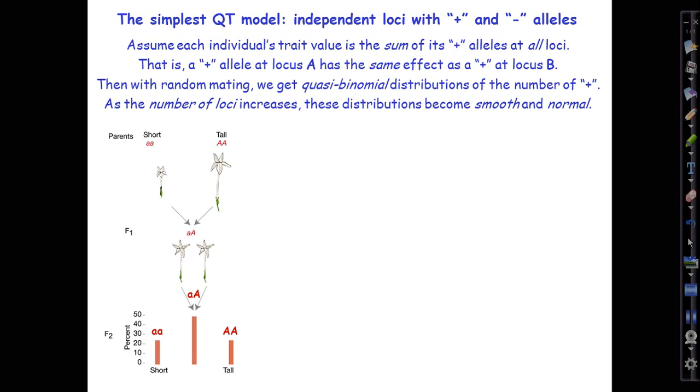So he had a pure-breeding short-flowered line and a pure-breeding tall-flowered line. Tobacco does happily inbreed, so it's possible to get them to be quite homozygous.